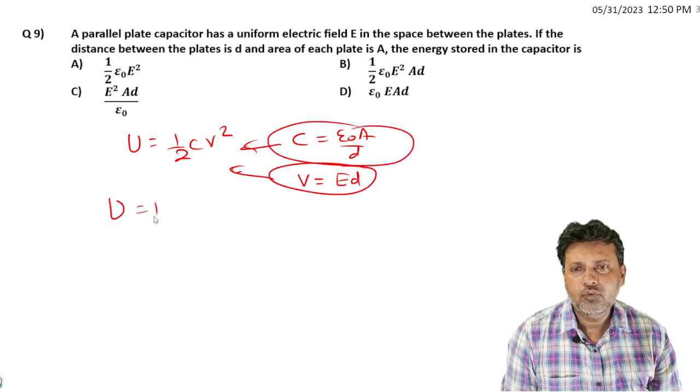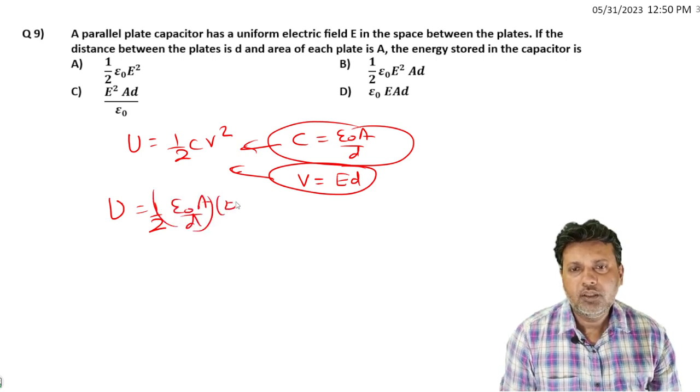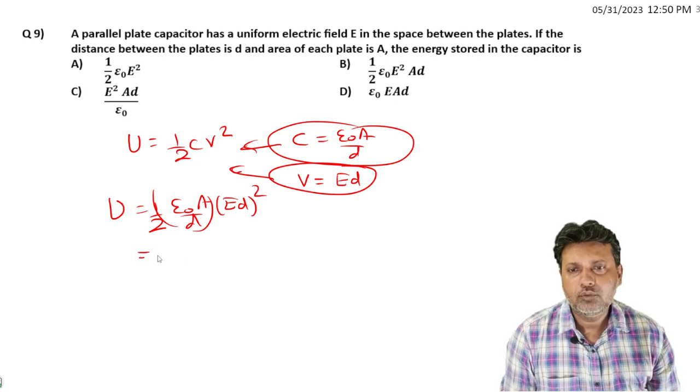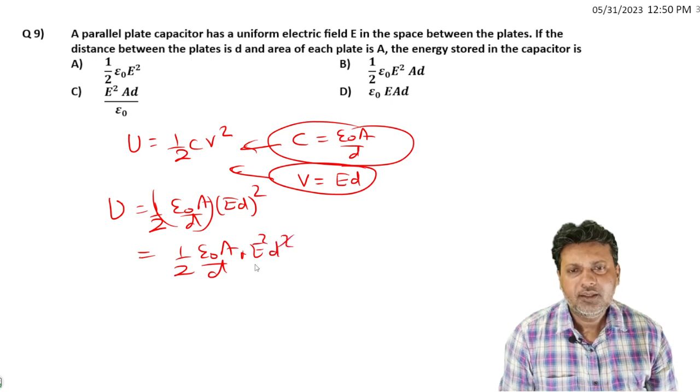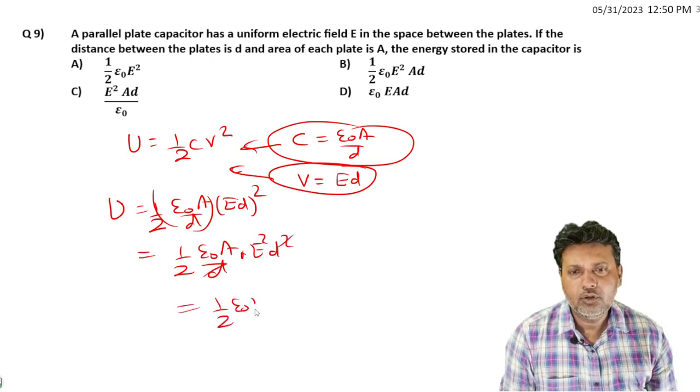So we use one-half C where C equals epsilon-not A upon d, and V equals Ed. Squaring this gives us one-half times epsilon-not A upon d times E squared times d squared. This simplifies to one-half epsilon-not E squared A d.